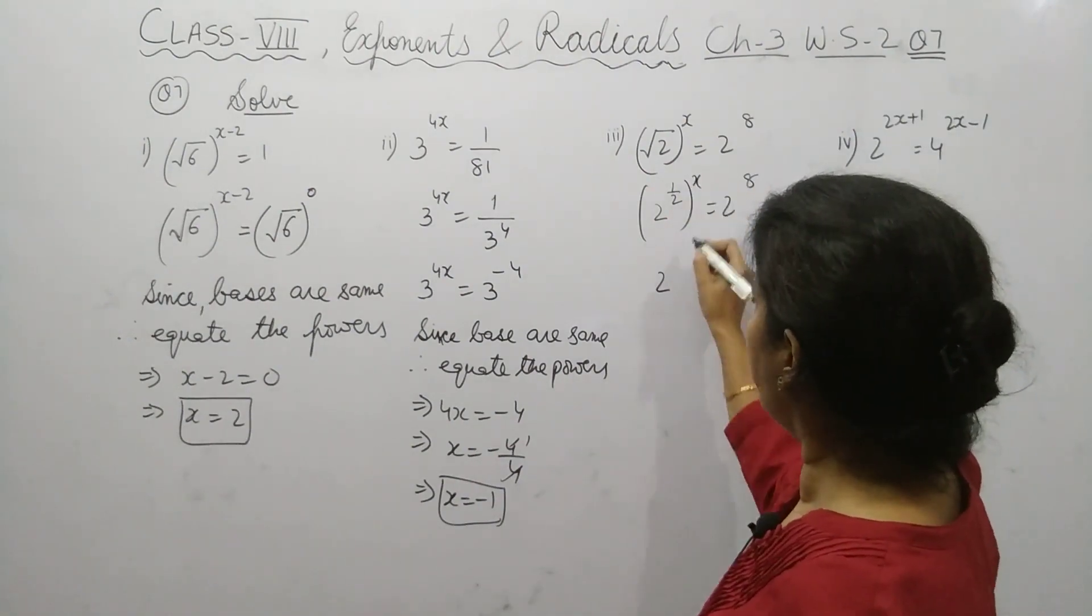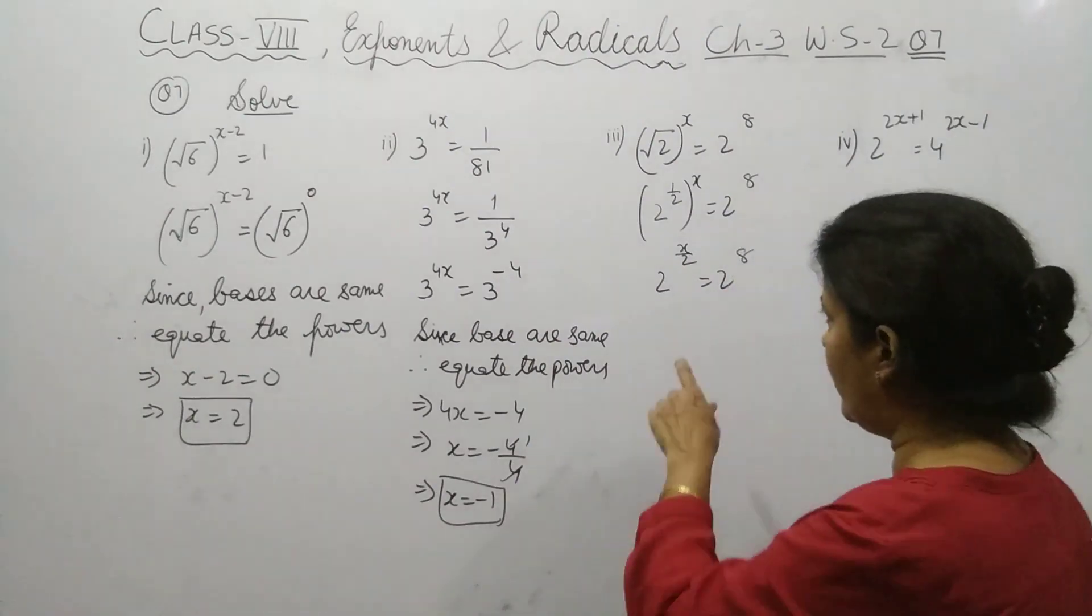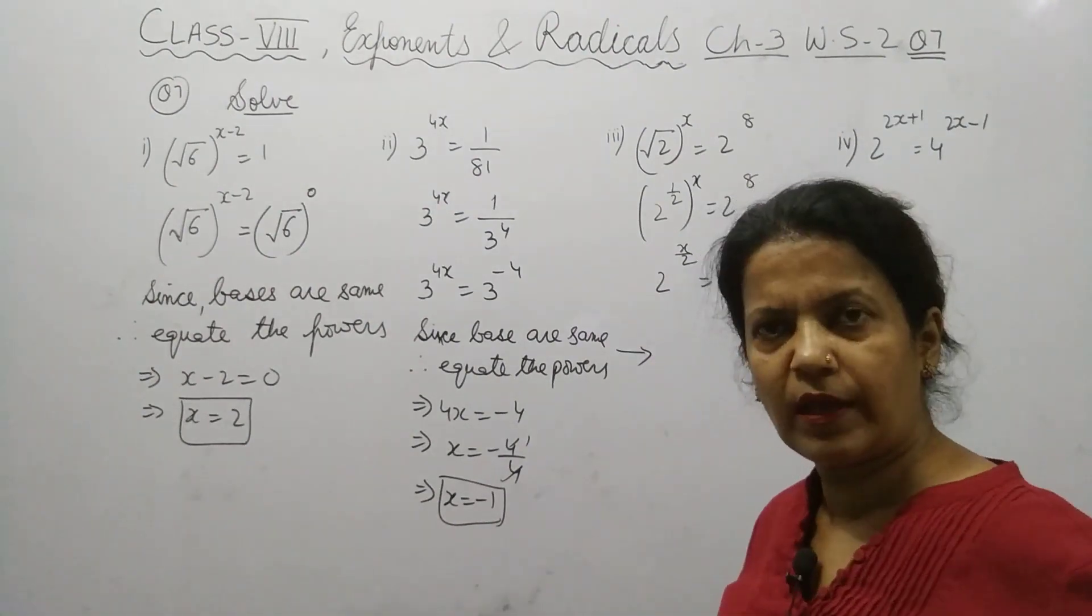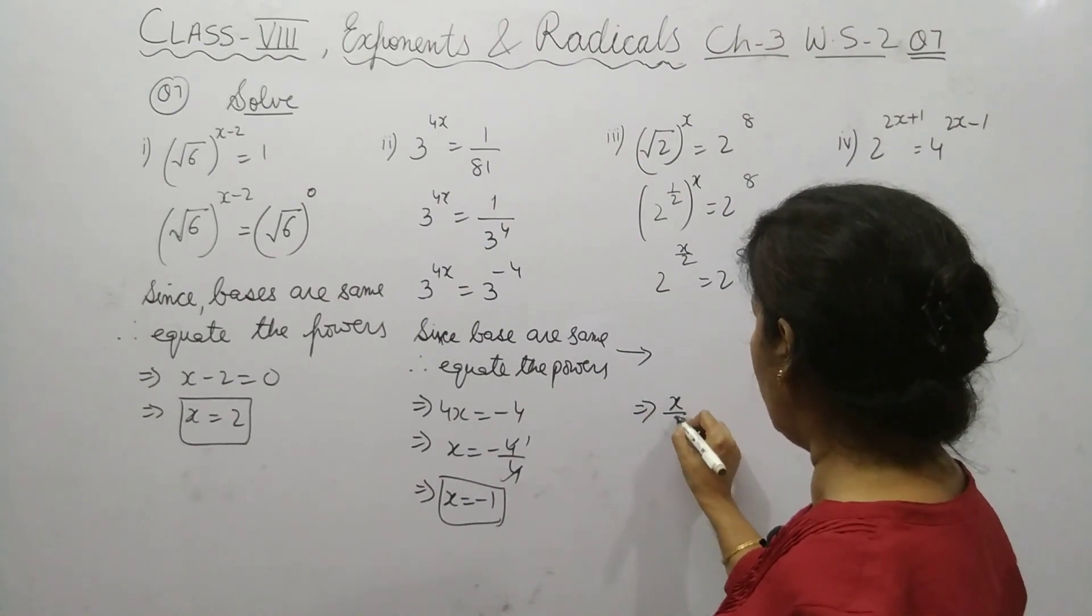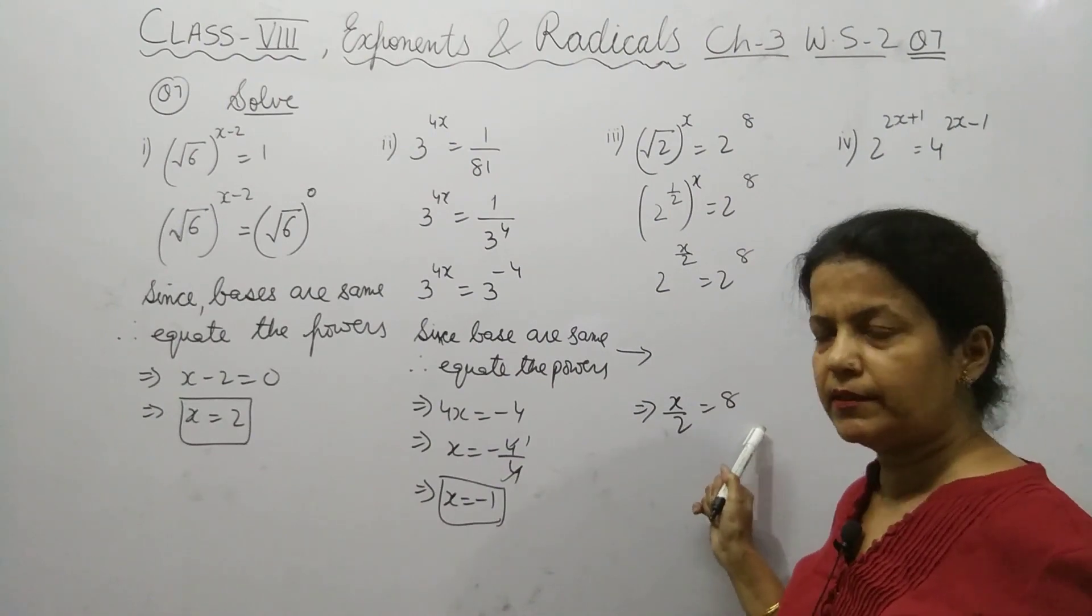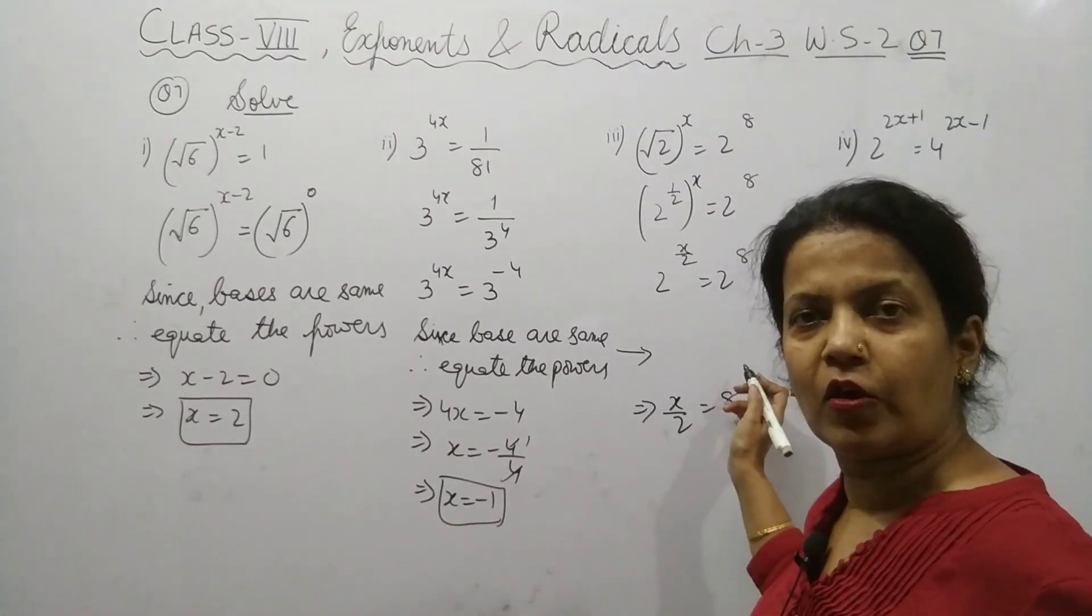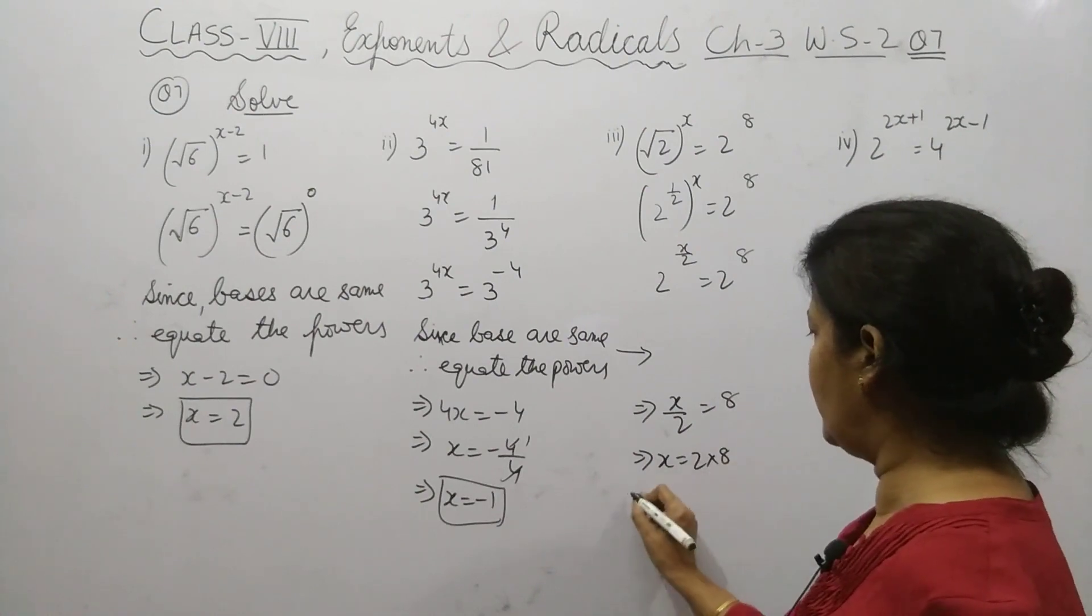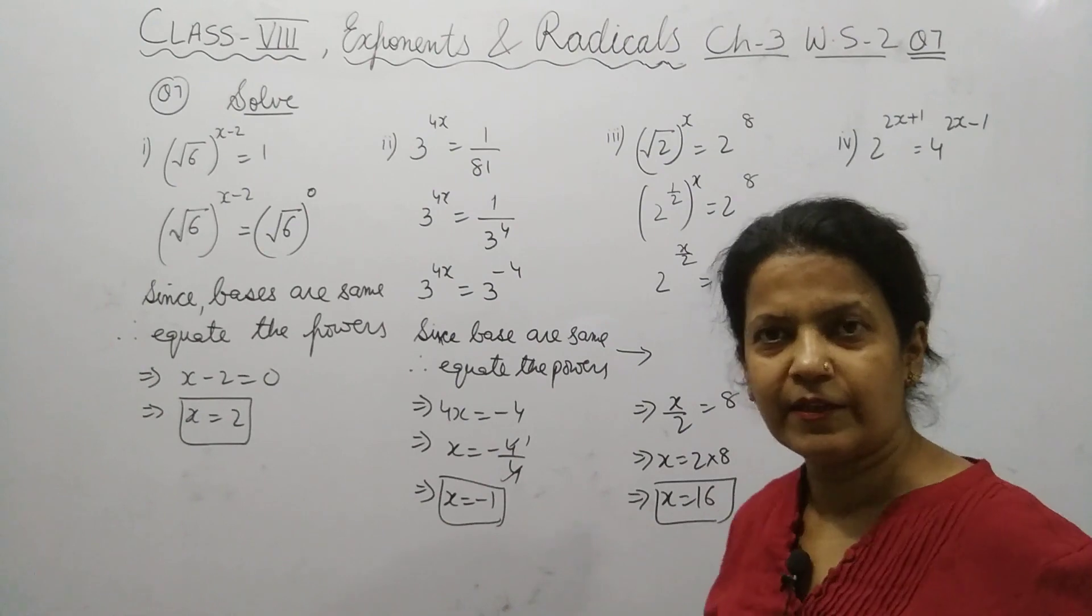Solve it for the multiplier. So it will become x by 2 equal 2 power 8. Now bases are same. So you will write this statement again here. Bases are same, therefore equate the power. x by 2 equal 8. How will you solve it? By cross multiply. So x equal 2 multiply 8. So x equals 16.